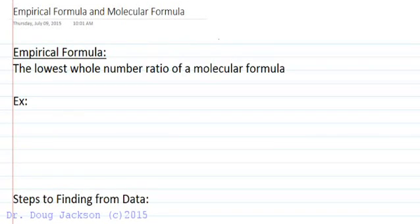Let's look at how to find the empirical formula and the molecular formula. The empirical formula is what it says. Empirical means experimental. So the empirical formula is derived directly from an experiment which determines percent by mass of each element within a compound, and it's the lowest whole number ratio of a molecular formula.